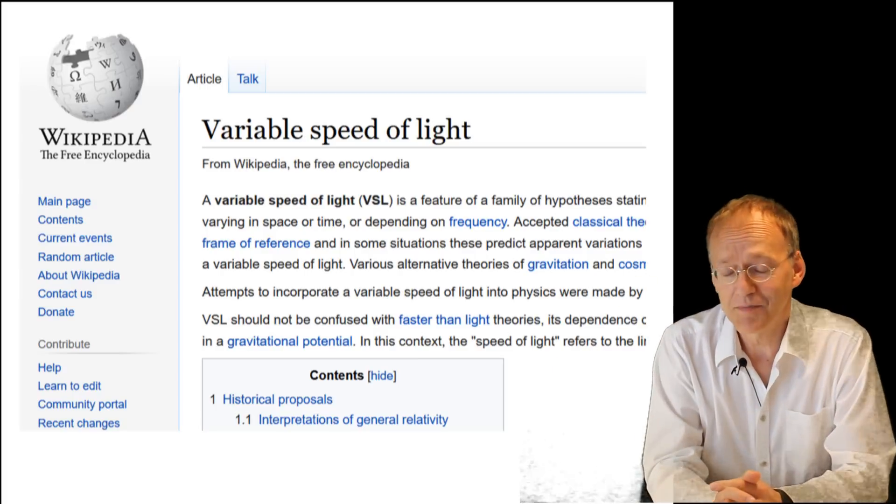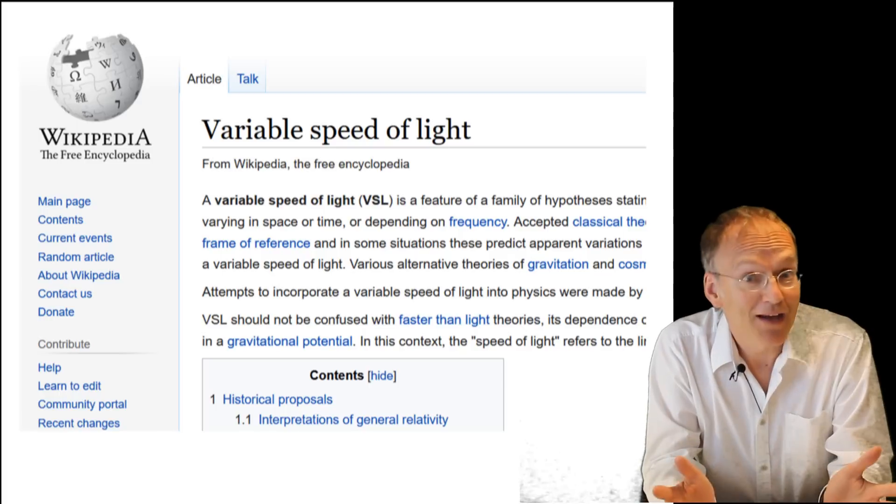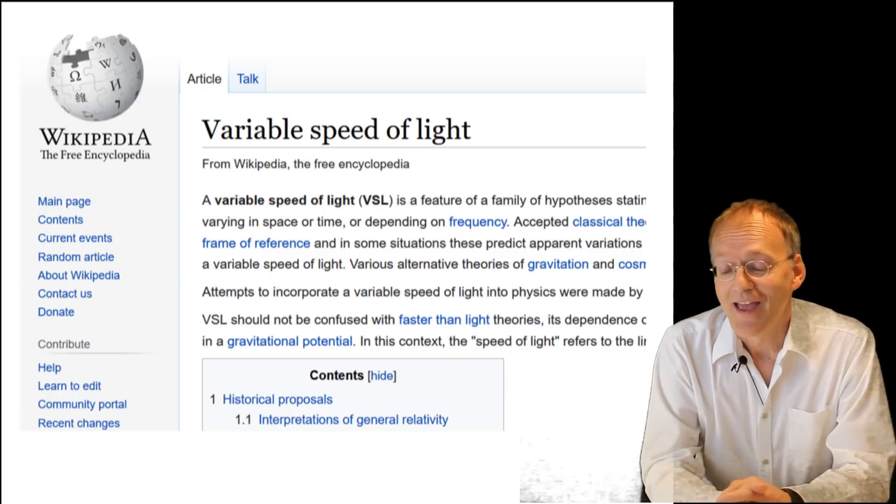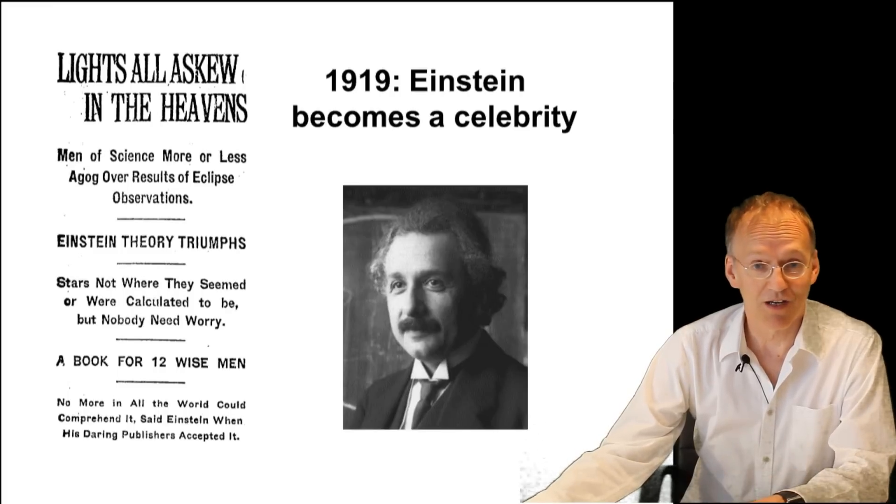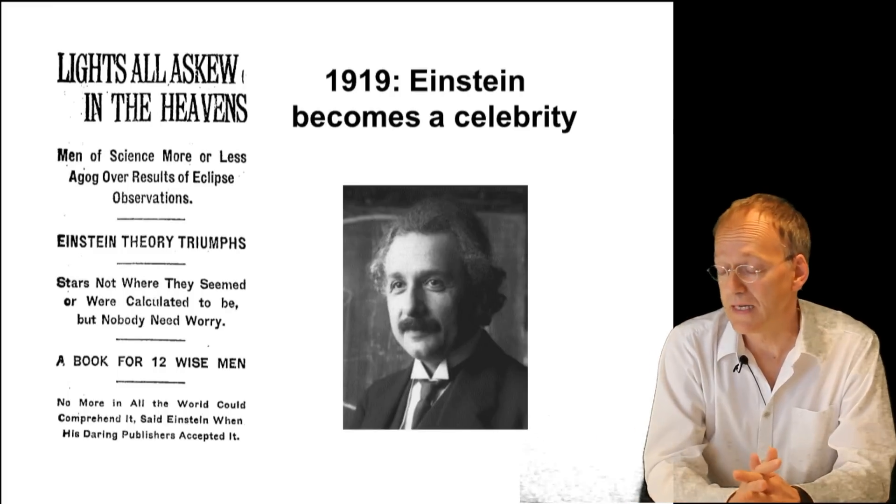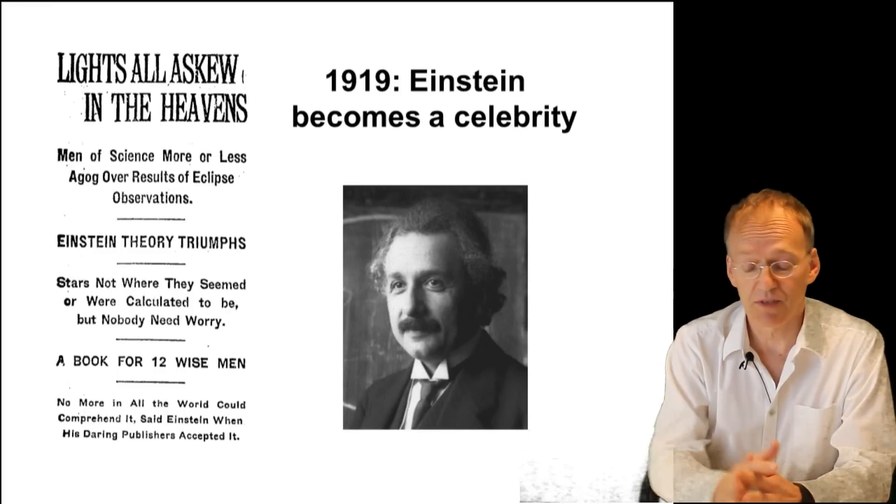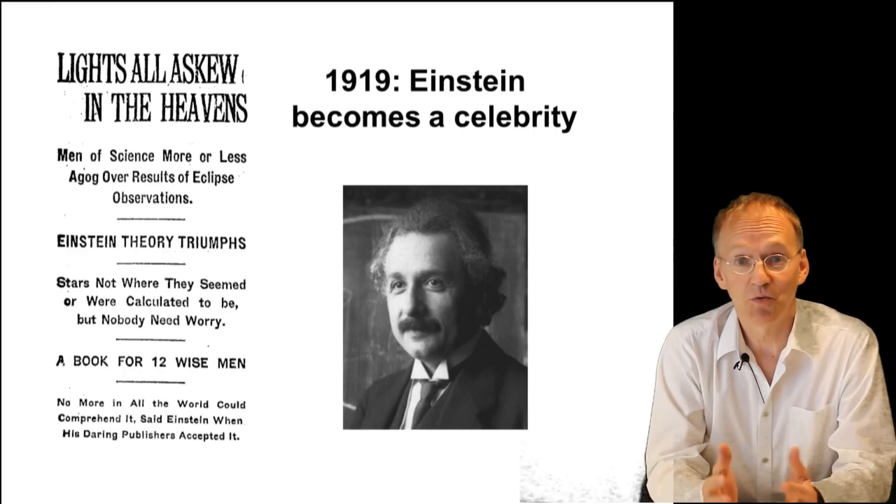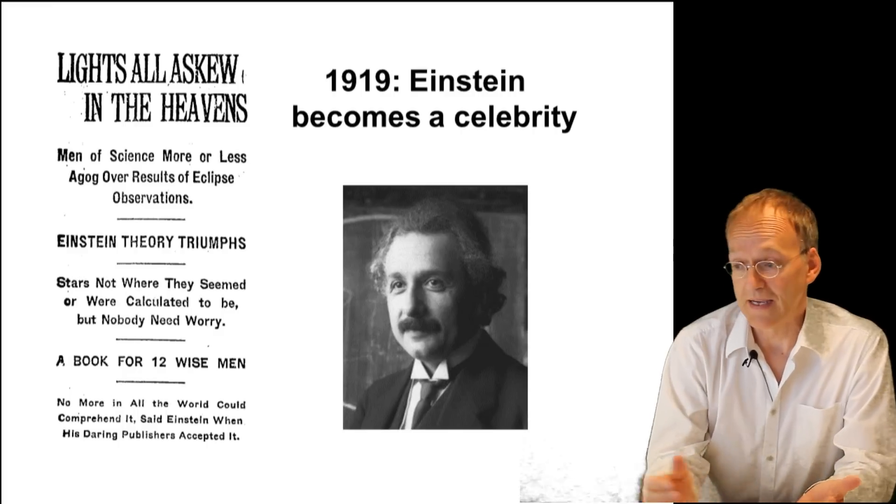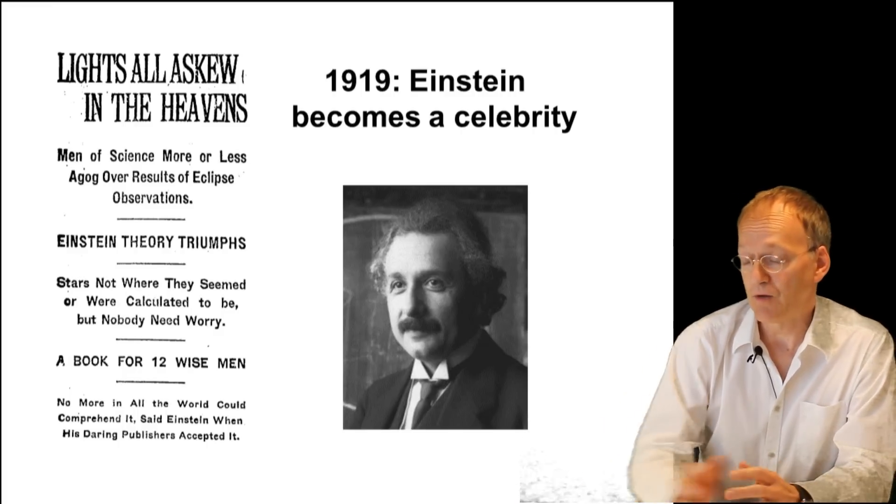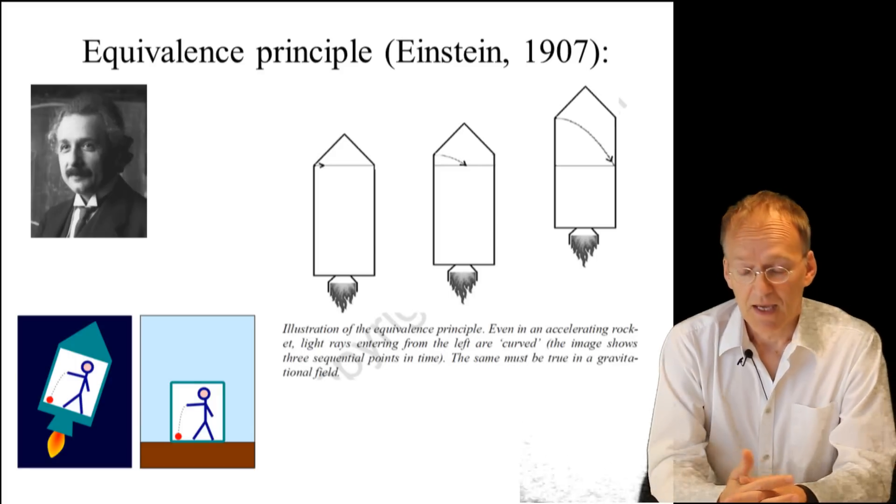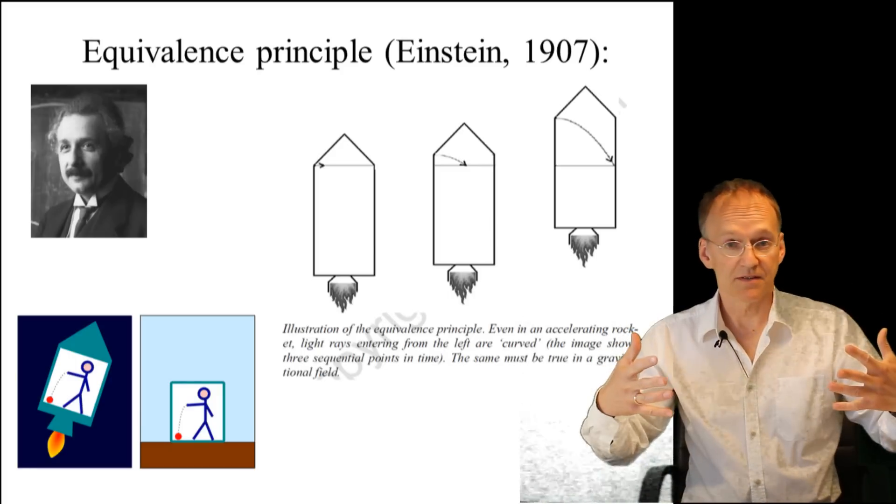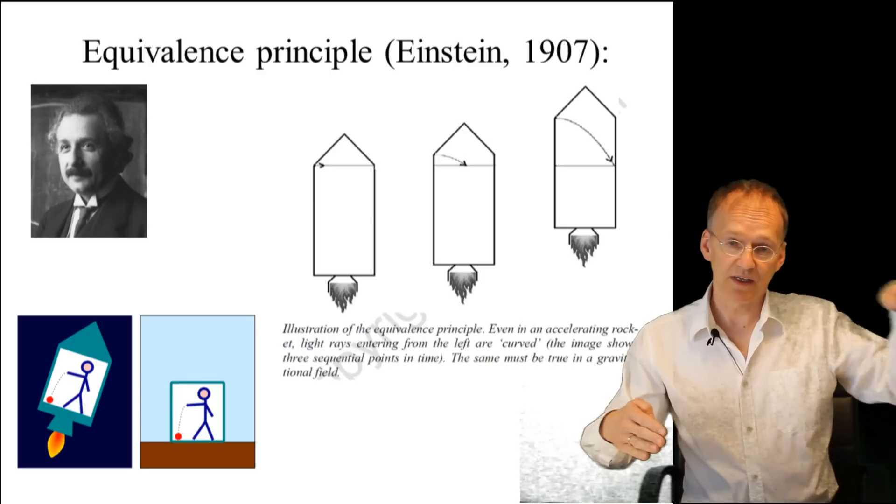No, don't worry, I don't pretend you're an expert on that. But you know who Einstein was, right? In fact, Einstein's most famous theory, general relativity, for which he became a celebrity in 1919, has to do with variable speed of light. Why? Because it's founded on something called the equivalence principle, and Einstein pondered about this fact that light rays in gravitational fields must be curved.